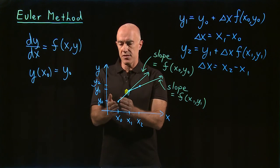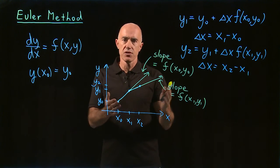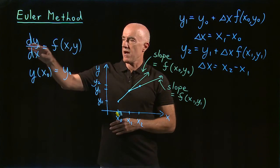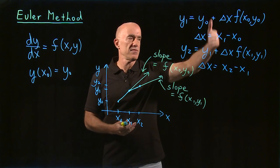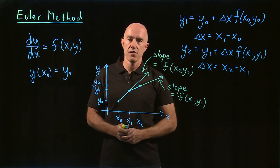And then starting at the initial point, you can march the solution forward by following the slope of the tangent line to the graph. That gives you formulas for the Euler method.